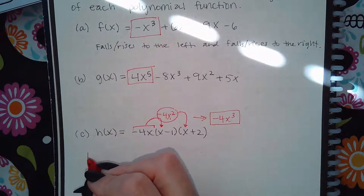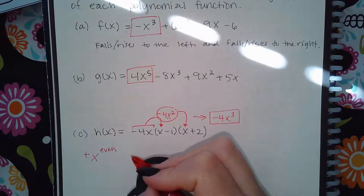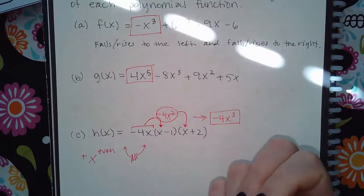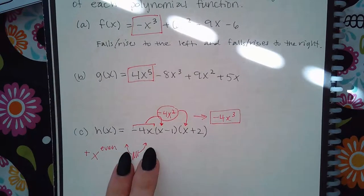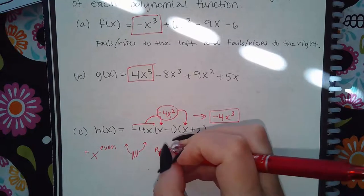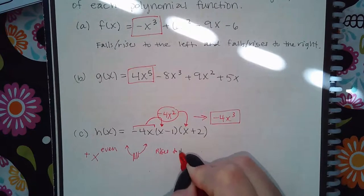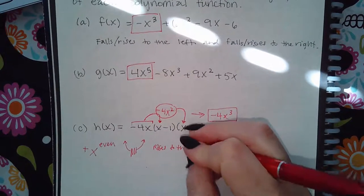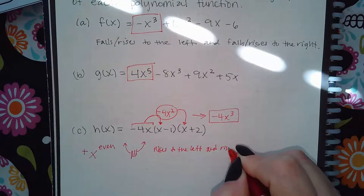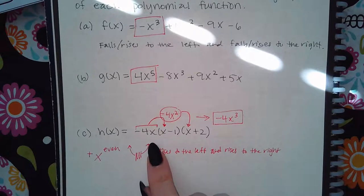Here's what you need to know: if the leading term has a positive coefficient and an even exponent, it's going to look like a parabola opening upward on both sides. We don't know what's happening in the middle, but we know it goes up on both sides. The way it's stated is: rises to the left and rises to the right.